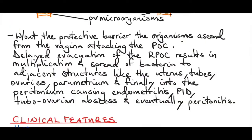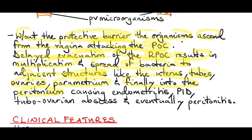To summarize: without the protective barrier, organisms ascend from the vagina and attack the products of conception. Delayed evacuation of the retained products of conception results in multiplication and spread of bacteria to adjacent structures — the uterus, fallopian tubes, ovaries, parametrium, and finally the peritoneum — causing endometritis, pelvic inflammatory disease, tubal ovarian abscess, and eventually peritonitis. If the infection continues to spread, it ends up as full-blown sepsis.